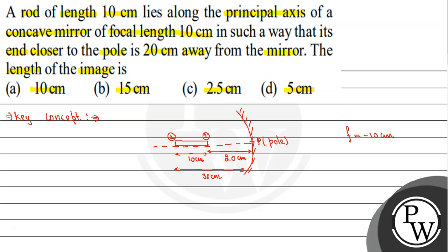According to sign conventions, we take focal length as negative — that is, minus 10 cm — because for a mirror, focal length is measured in the direction opposite to incident rays, making it negative. Similarly, the object distance u is also taken as negative. We will apply the mirror formula: 1/v + 1/u = 1/f, where v represents the image distance.